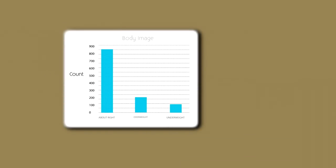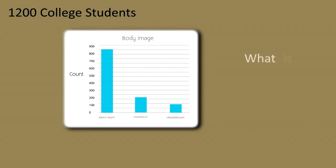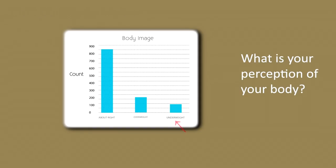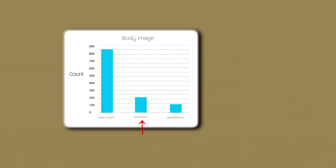Bar charts are most commonly used to examine the distribution of individual variables. Here we show the distribution for a random sample of 1,200 US college students who were asked: what is your perception of your own body? In this bar chart, the X or horizontal axis includes the three response categories: underweight, overweight, and about right.